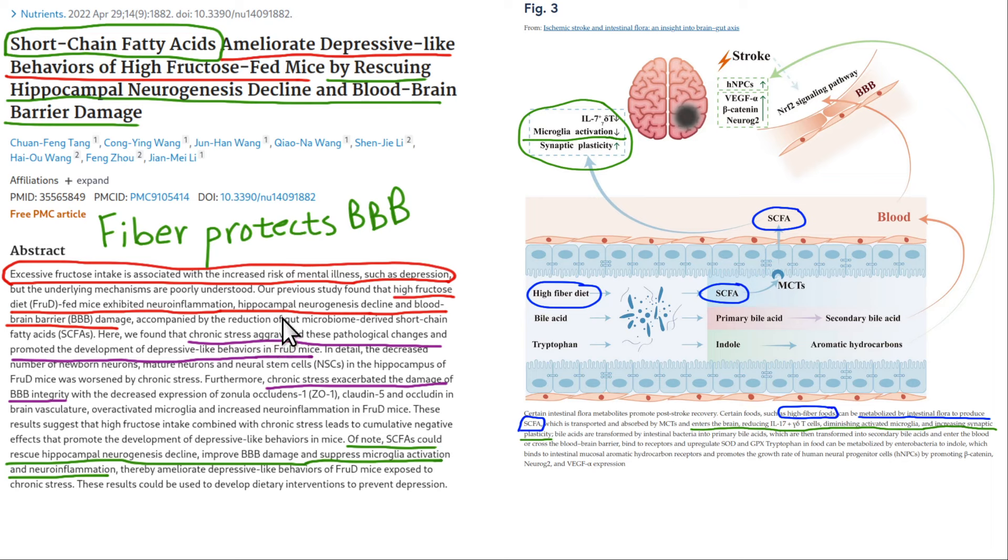Okay, high fructose corn syrup diets, they cause problems with the blood-brain barrier. Same thing with excessive psychological stress can damage the blood-brain barrier. We talked about EMF can partially open up the blood-brain barrier.